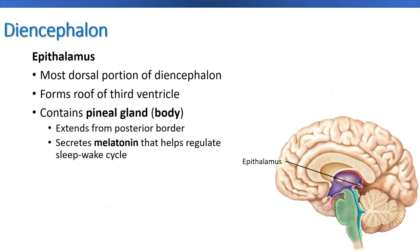The last of the thalamus structures is the epithalamus, which is the most dorsal or posterior portion of the diencephalon. This is where we're going to see the pineal gland, which secretes melatonin to help regulate our sleep and wake cycles.